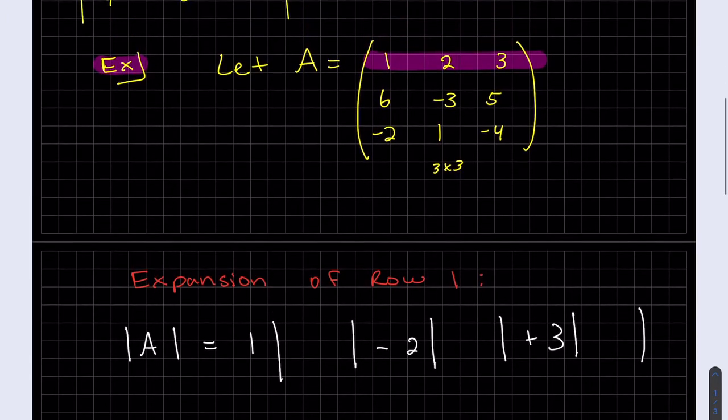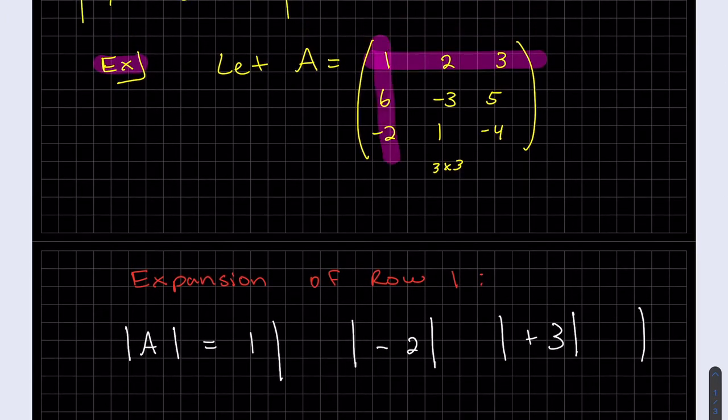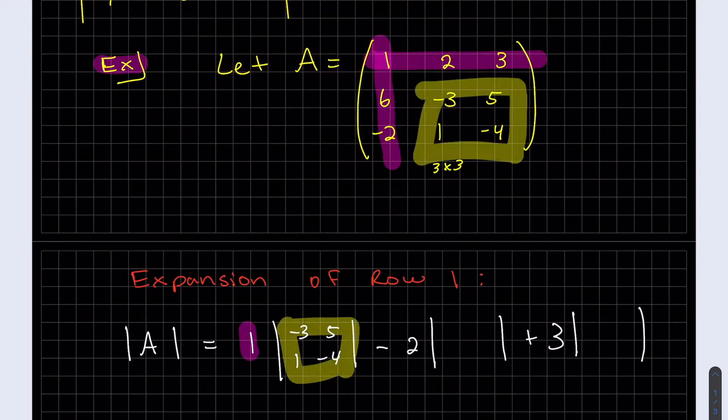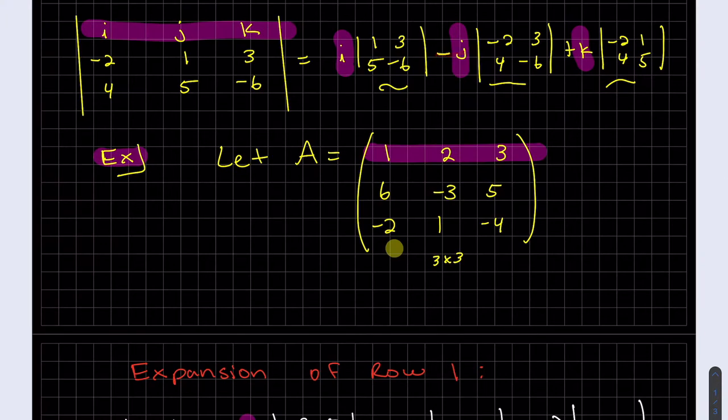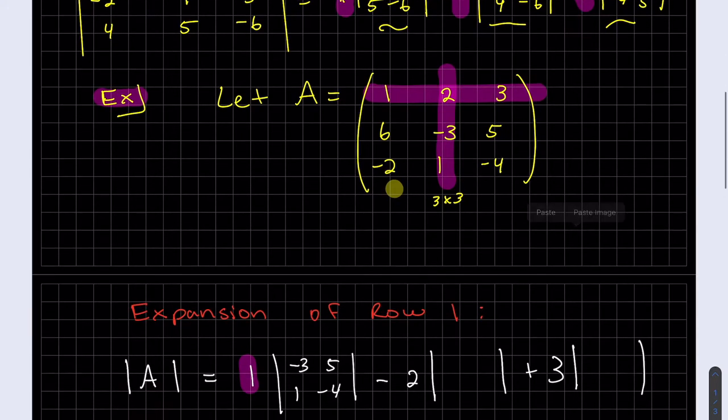So it's one times a minor minus two times a minor plus three times a minor. And so we just block out. So the first minor is you block out that one. So you can see here, this is what we get. That's the minor that's left. And then we're going to move over to two. So we use minus two here. So the minus, it's alternating plus minus plus. I'll talk about more about that in a minute. Just block out the two, since that's the one we're doing. And so we're left with six minus two, this and this. And last but not least.